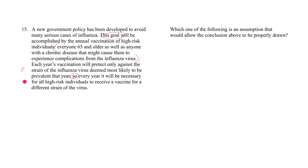Here is where you get the premise-conclusion argument. The stuff above is context — it's just setting up the situation, telling us what the government policy is. The government policy is: we need to decrease the number of critical cases of the flu, and how we accomplish that is by vaccinating high-risk individuals every year. That's just the government's goal and the plan to achieve it.